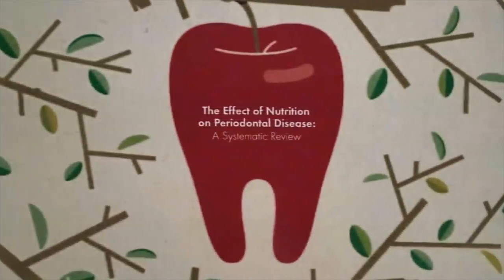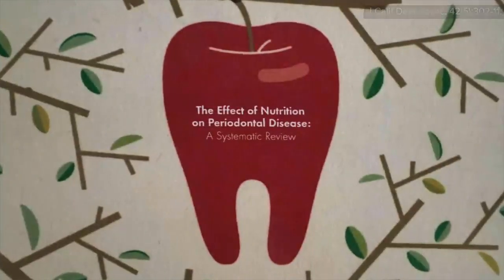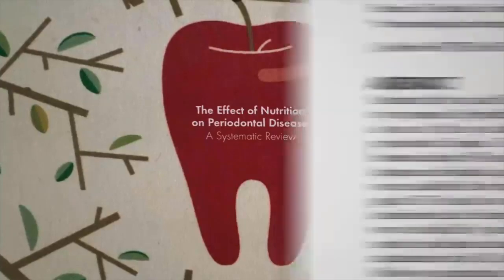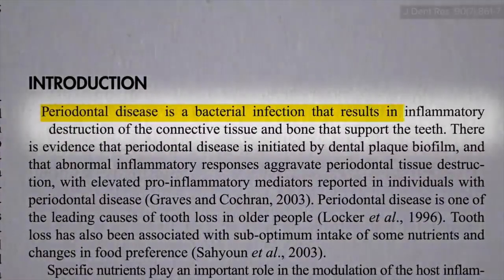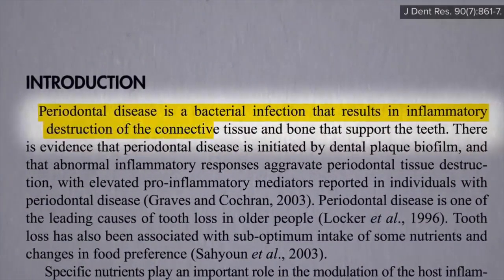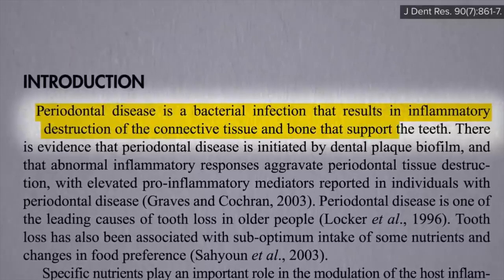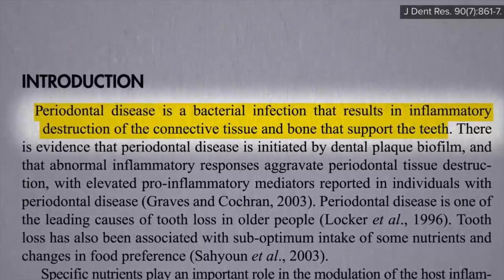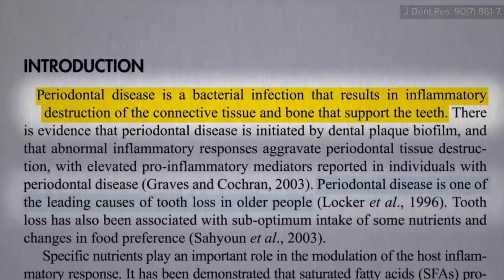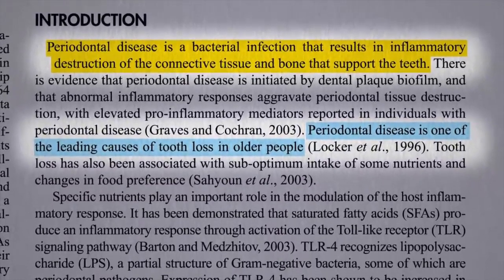What's the effect of nutrition on periodontal disease? Periodontal disease is a bacterial infection that results in inflammatory destruction of the connective tissue and bone that supports the teeth, and is therefore one of the leading causes of our teeth falling out.